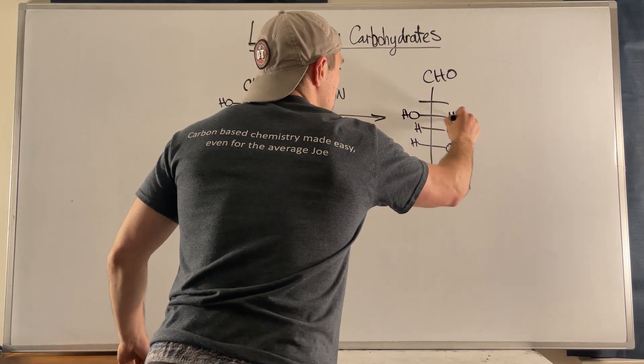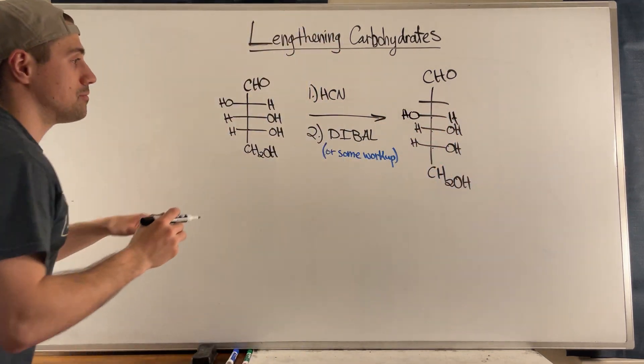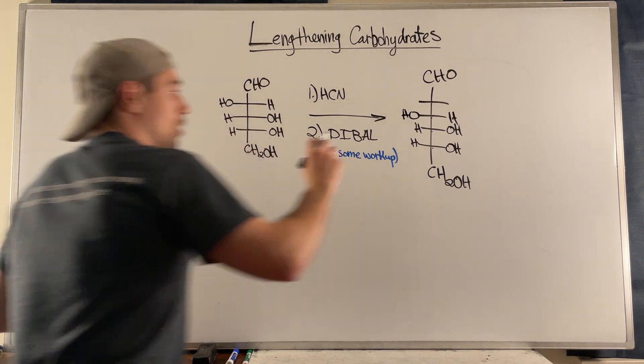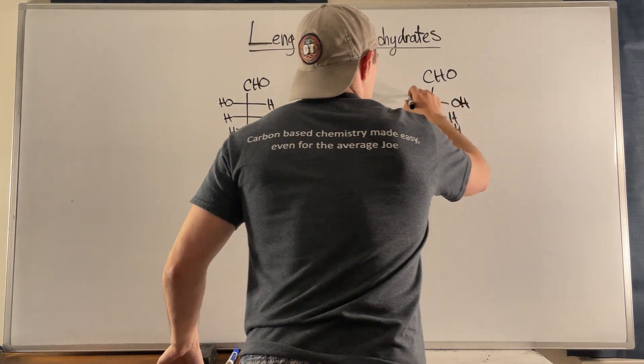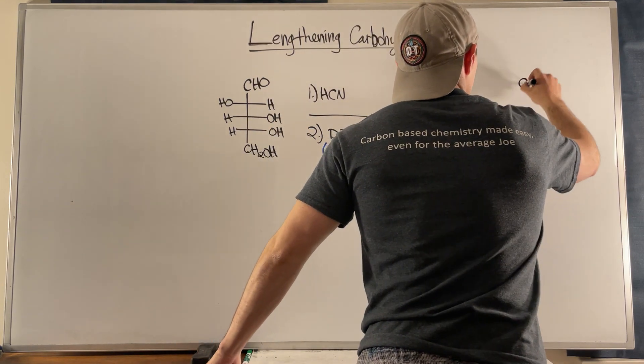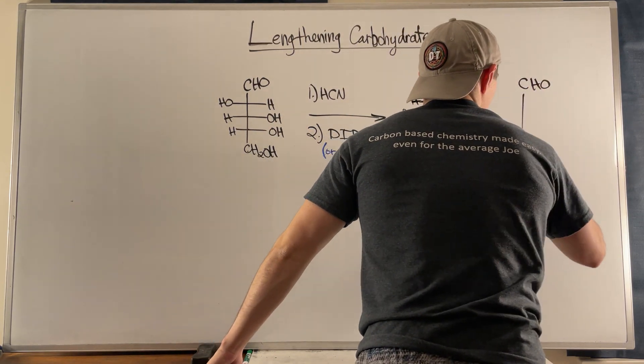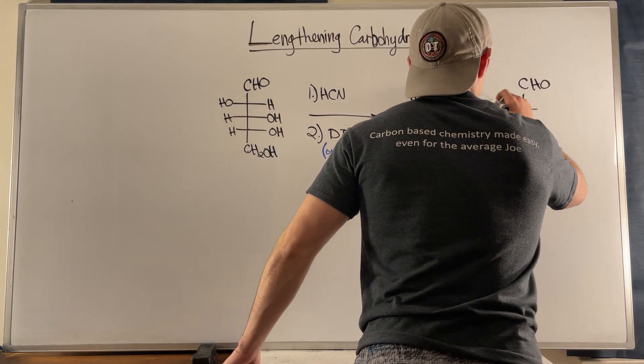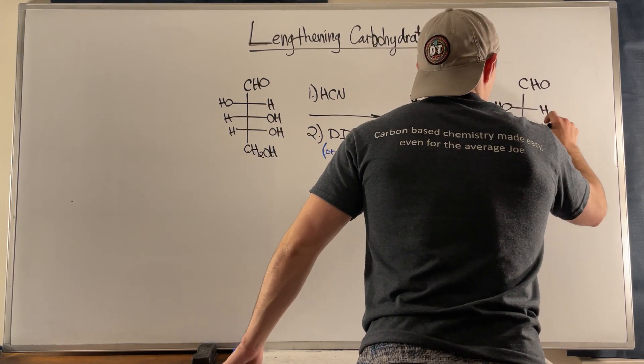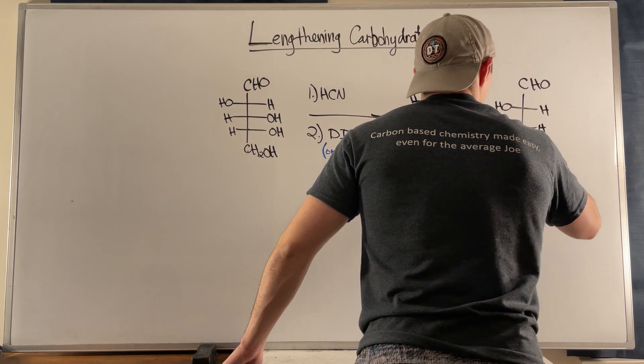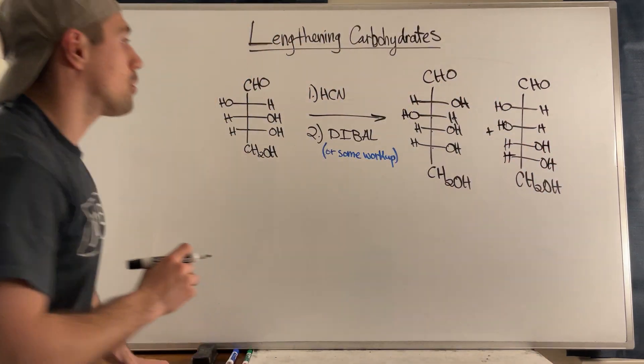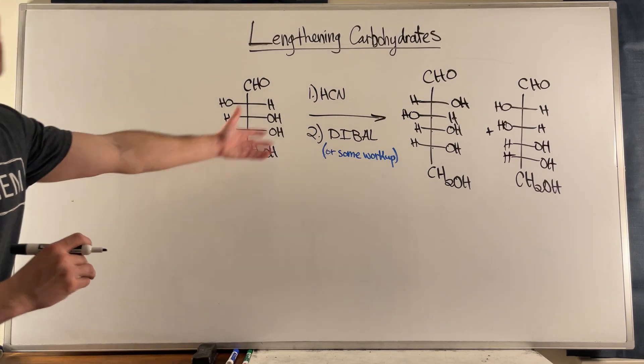So the first three, one, two, three stereocenters are exactly what you see here, but the one you add, what you end up seeing is you generate two products and they are both epimers, and we will explain how this happens and why it is observed. Okay, okay cool. So you'll end up getting two different types of products.